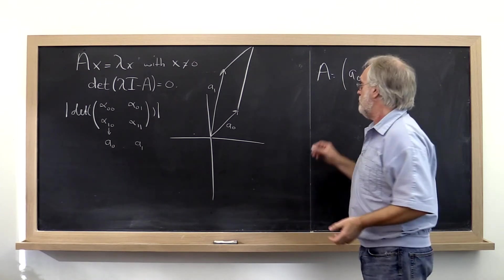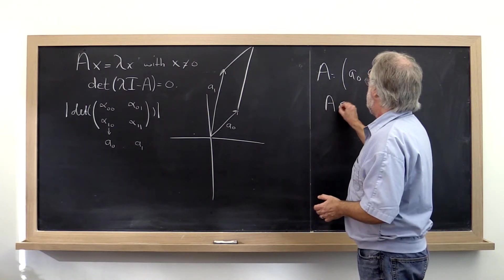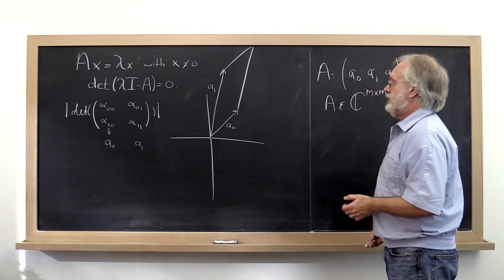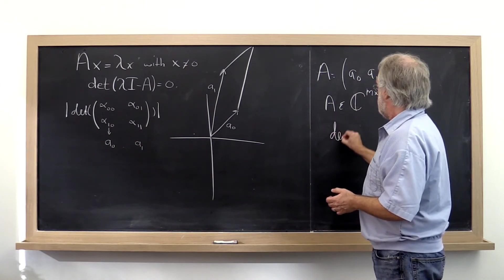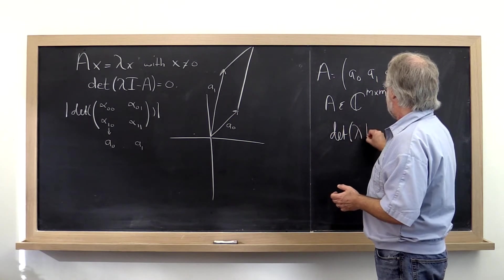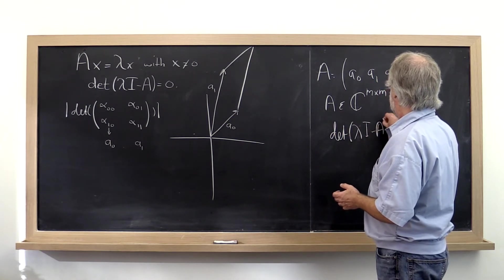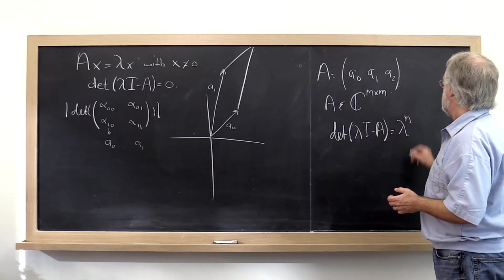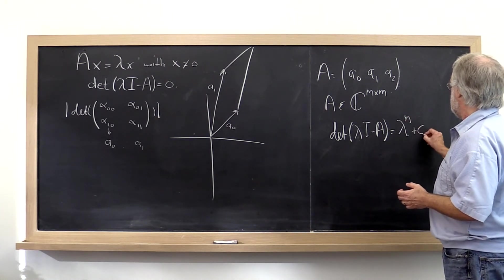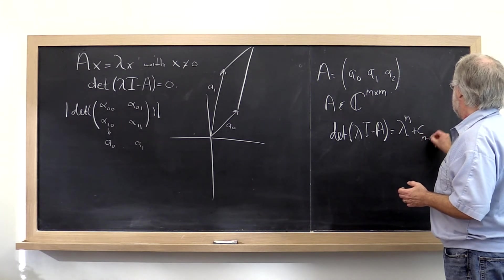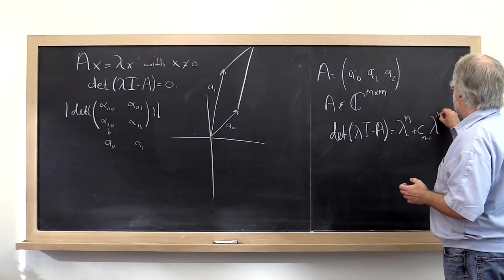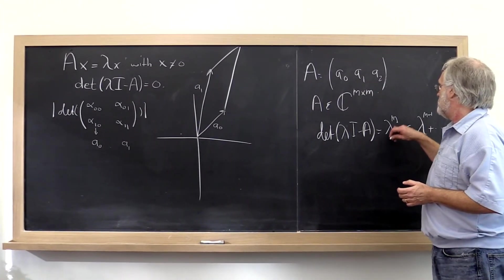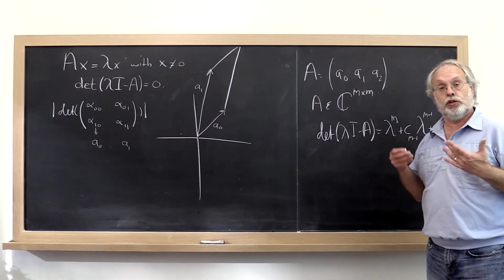The only thing that is important is that if A is an m by m matrix, then the determinant of lambda I minus A looks like lambda to the mth power plus some constant times lambda to the m minus first power, and so forth. In other words, it is a polynomial of degree m.